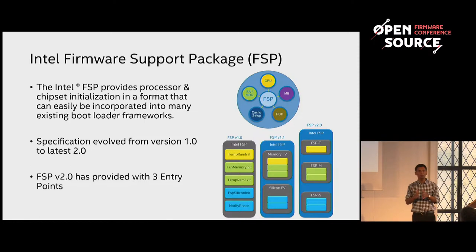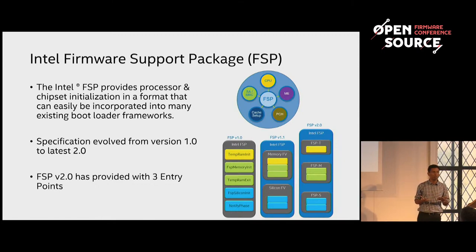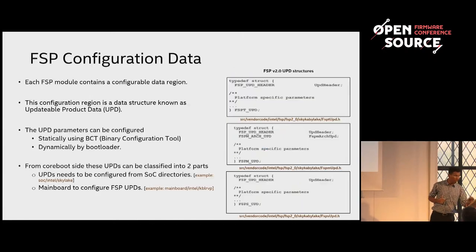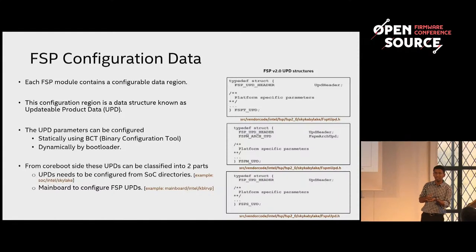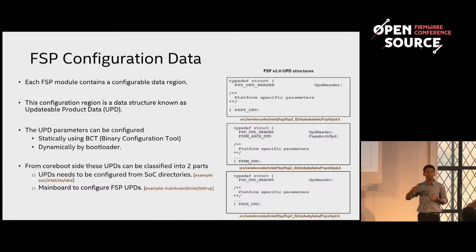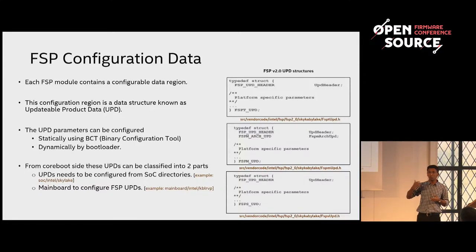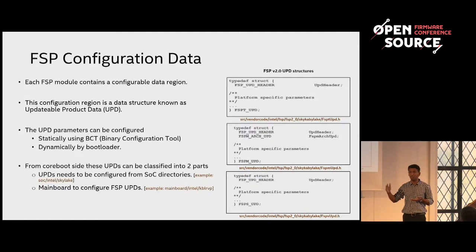How does FSP work? It is a binary blob that works with the bootloader based on certain inputs or configuration. The bootloader is the master of the platform — it knows the platform very well. Those inputs are basically configuration data we call UPD. Each FSP blob — FSP-M, FSP-T, or FSP-S — contains some kind of configuration data called UPD. These are basically inputs to FSP itself. Your bootloader owns that input, provides it based on your SOC and mainboard design, and then FSP executes accordingly.